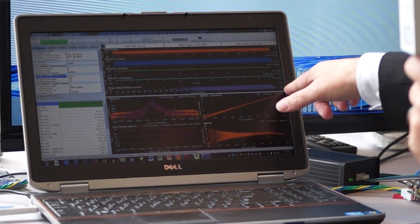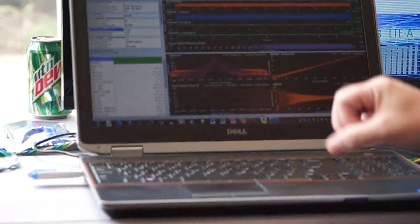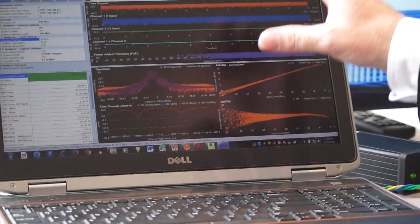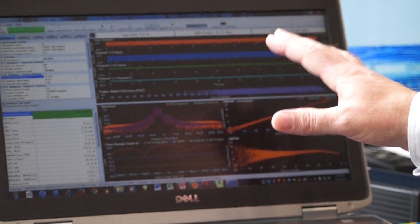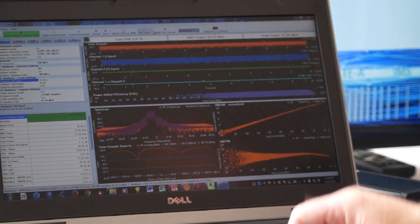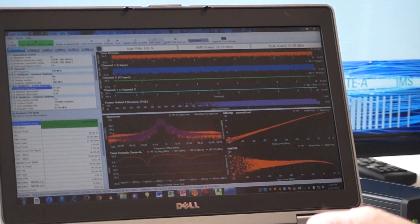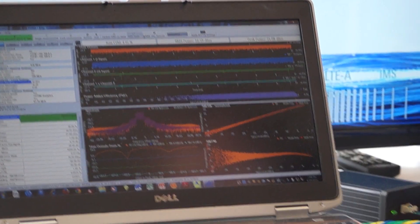And you can see the effect immediately on the software. So, this is a very powerful, very fast way of characterizing a PA in a kind of a complete way under envelope tracking conditions. So, that's our envelope tracking solution.